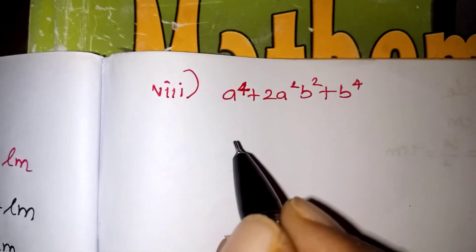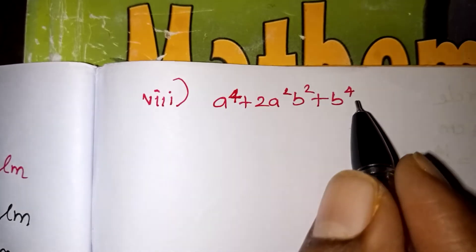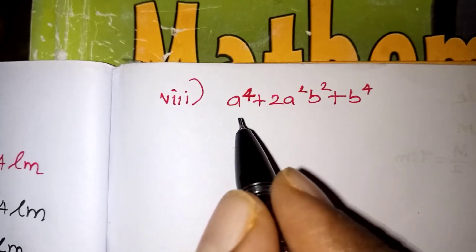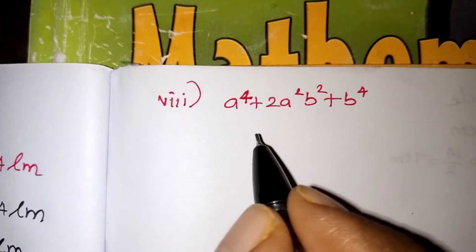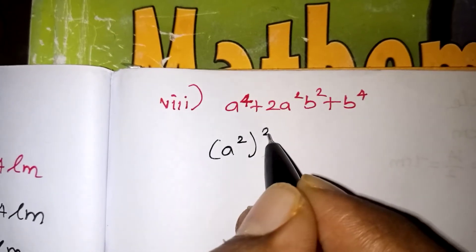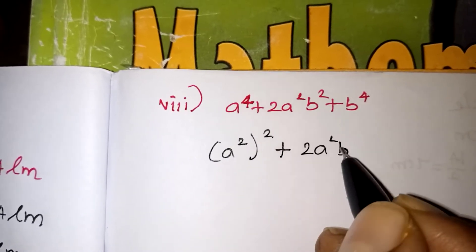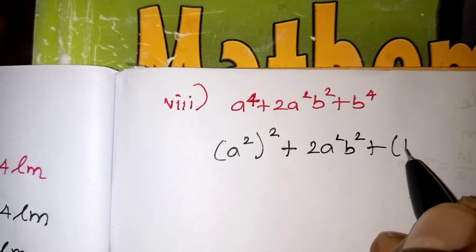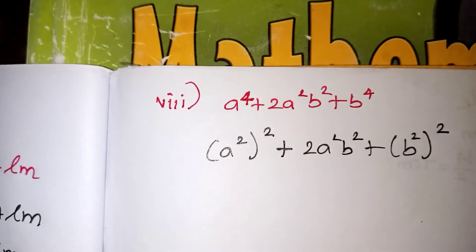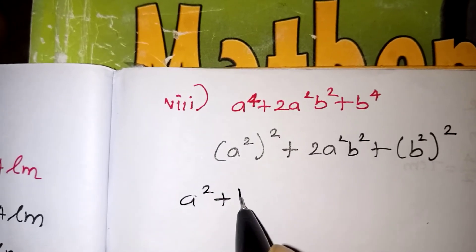Now look at problem 8: a to the power 4 plus 2a squared b squared plus b to the power 4 is given. The first and last numbers are perfect squares because they have power 4. We can write a to the power 4 as a squared the whole squared, plus 2a squared b squared, and b to the power 4 as b squared the whole squared. The 2 can be written as 2 into 2.